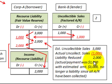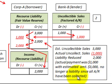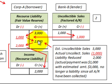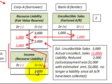Since all accounts receivable have been collected and the recourse liability of $2,000 is no longer needed, we debit the recourse liability for $2,000 to zero it out. Since there was no cash transaction, we credit income by $2,000, recognizing the unused portion of the liability as income.